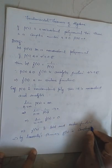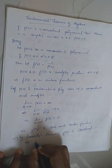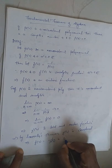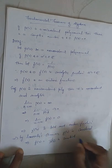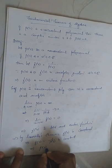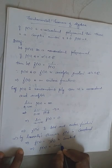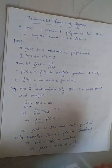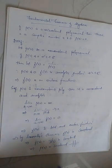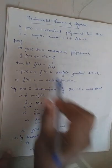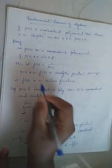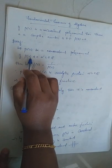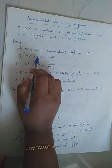F(z) is constant implies 1/P(z) is constant, which implies P(z) is constant. But this is a contradiction because P(z) is a non-constant polynomial. Therefore there must exist at least one point Z such that P(Z) = 0 — that is, P(z) has at least one zero in the complex plane.